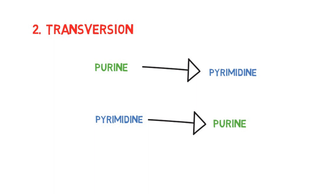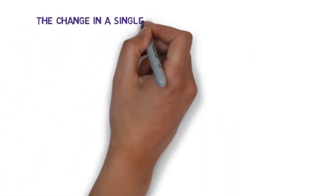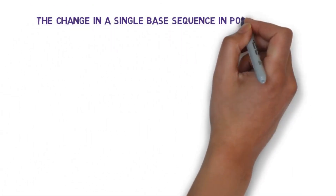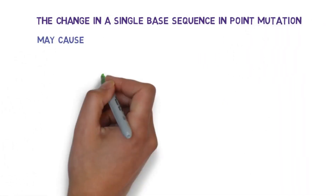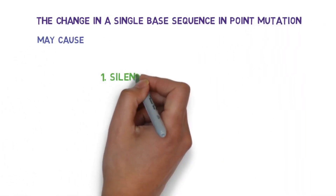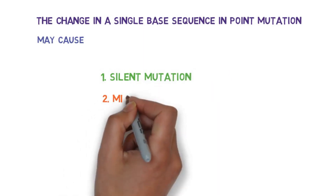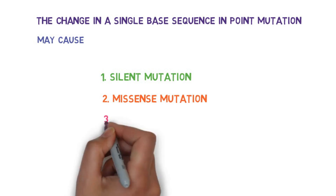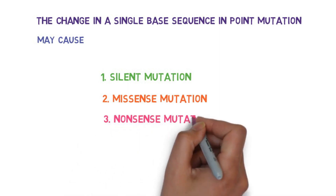So those were the subclasses. Now, the change in a single-base sequence in point mutation may cause: first, silent mutation; second, missense mutation; and third, nonsense mutation.